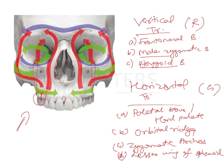The pterygoid buttress transmits stress from the concha of the nasal bone and the second and third molars from the inner surface, terminating in the middle portion of the base of the skull inside the orbital bone. The horizontal trajectories of force are undertaken by the green lines in the image.